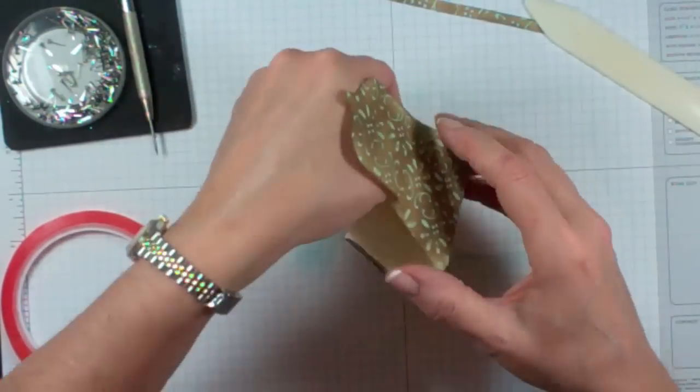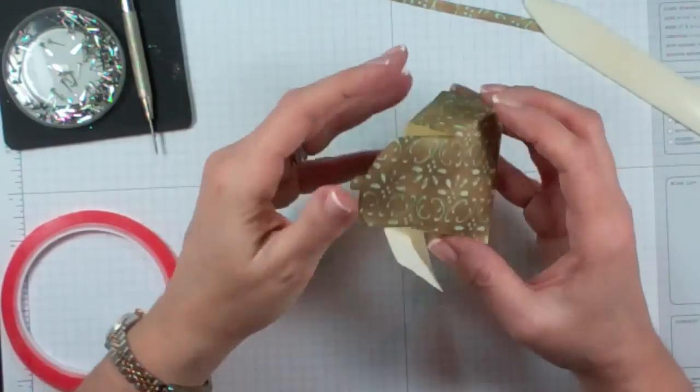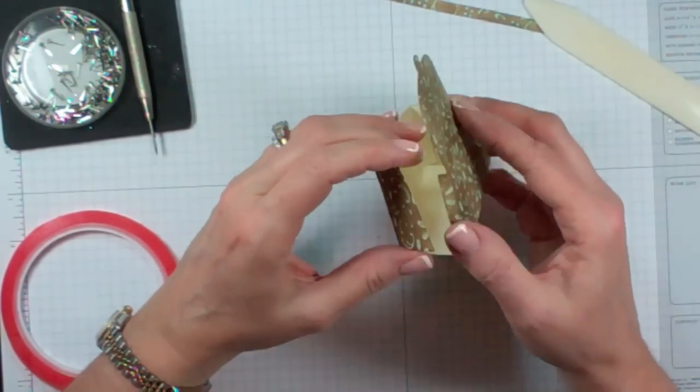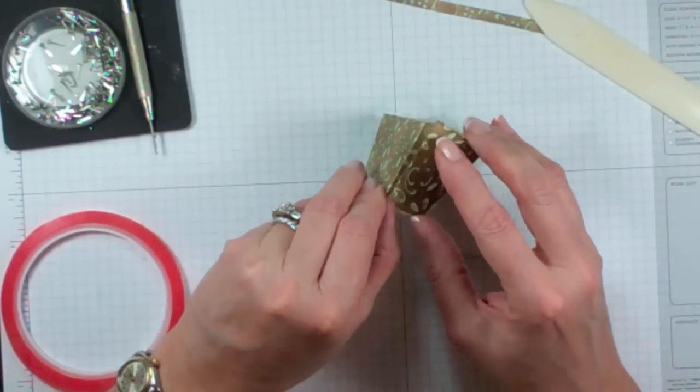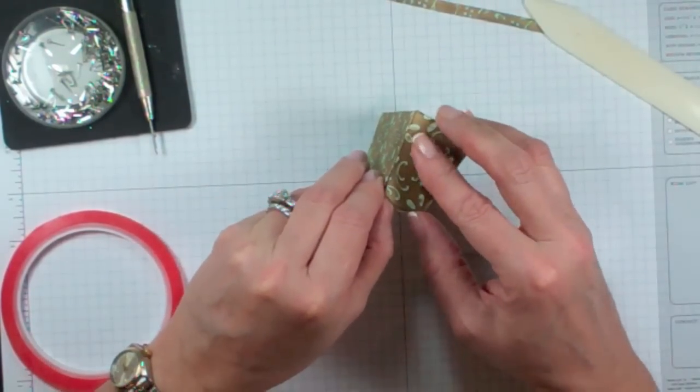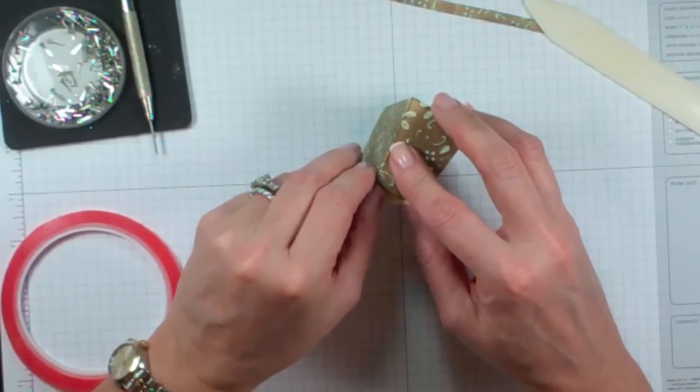Once that's where I want it to be, I'm going to go on the inside and press to give that nice finished look. And then I'm going to do exactly the same thing on this edge. I'm going to hold it down, line up the corners, and then press.